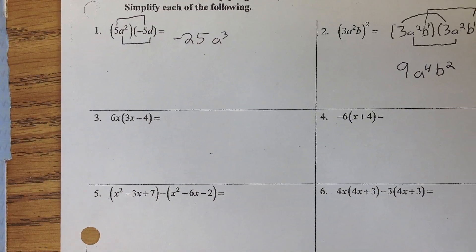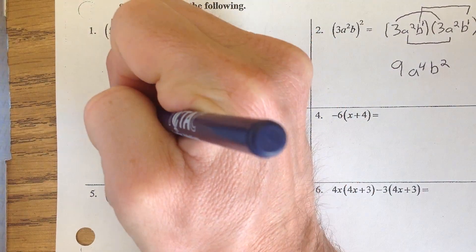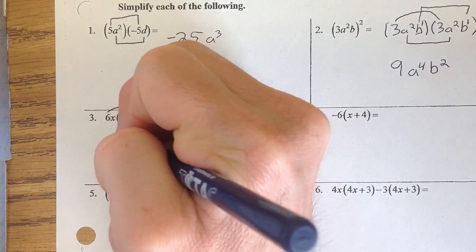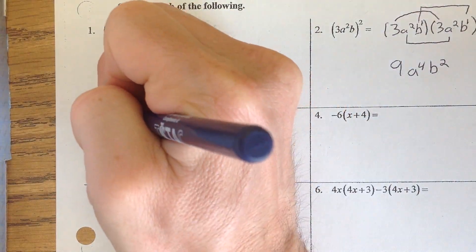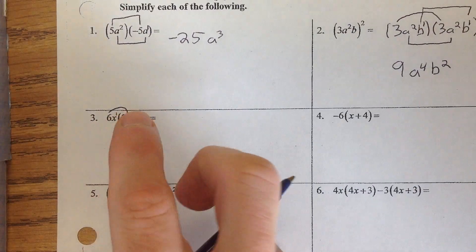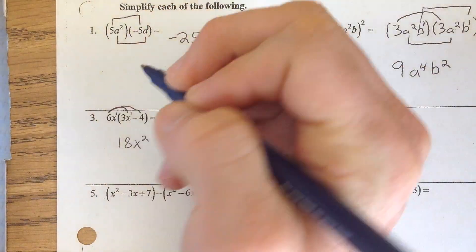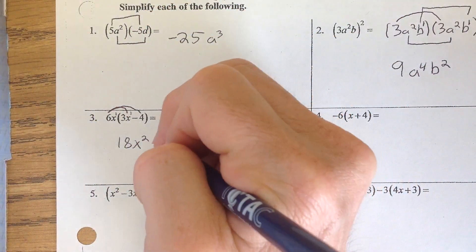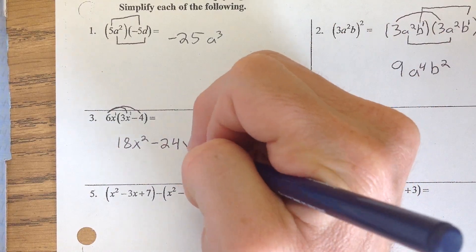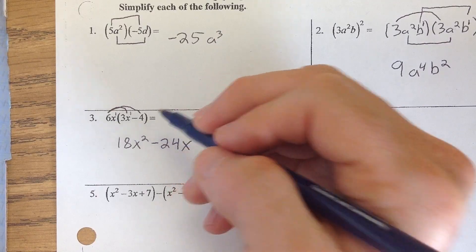Let's take a look here — we've got a little distribution, but we're still doing multiplication. So this is 6x times 3x. The 6 times the 3 gives us 18, and x to the first times x to the first — adding the exponents, 1 plus 1 — gives us x squared. Then we do 6 times negative 4, which is negative 24. Since there's nothing to multiply this x to the first by, it just comes along for the ride and stays as x to the first.